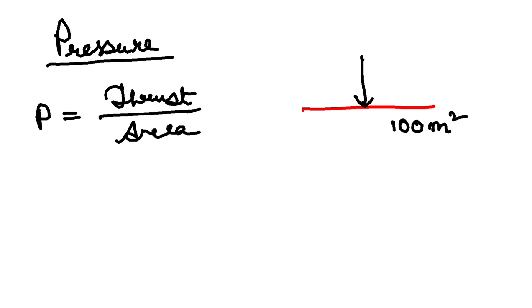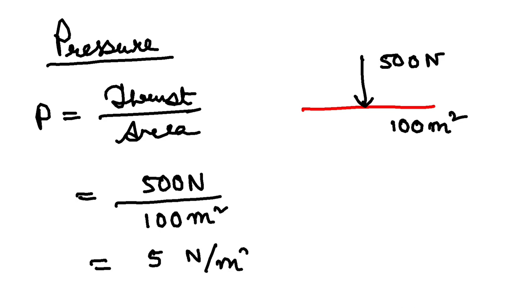And suppose I am applying a thrust of 500 Newton force, it is a force, right. Newton is the unit. So my pressure will be 500 Newton is my thrust and 100 meter square is my area. So this will be 5 Newton per meter square, isn't it? So SI unit, SI unit of pressure is Newton per meter square.